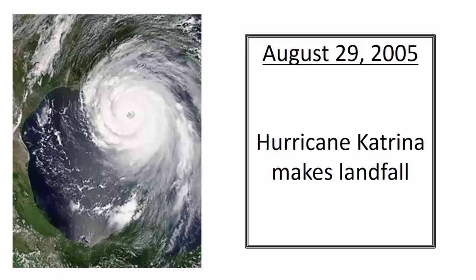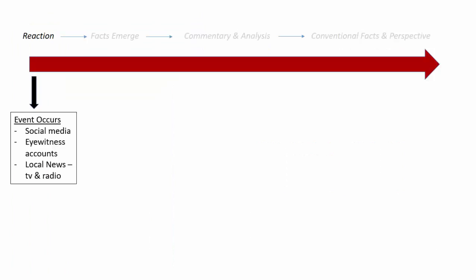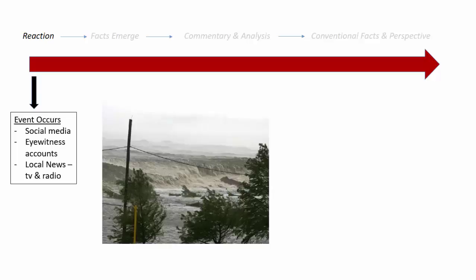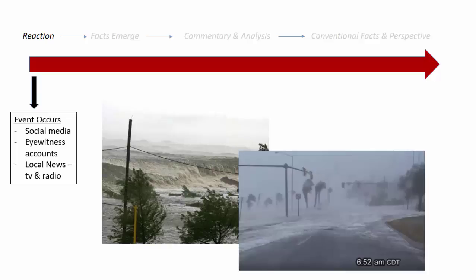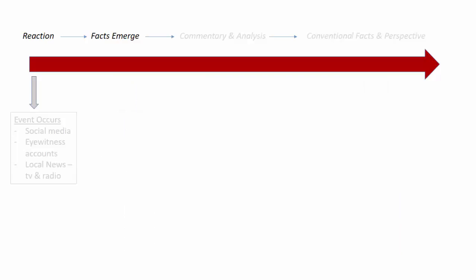Let's use one historic event to illustrate our point. August 29, 2005, Hurricane Katrina made landfall, devastating the city of New Orleans and its surrounding area. The first information from New Orleans was composed of reaction. Social media, eyewitness accounts, and local news on TV and radio consist of an emotional response to the event. Assumptions and rumors are made based on experience. People react to individual trauma and create raw, sometimes volatile, statements.